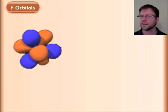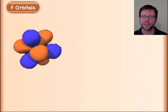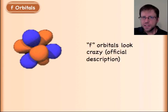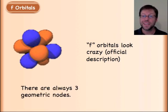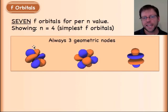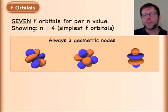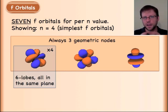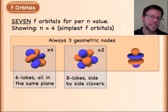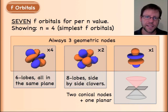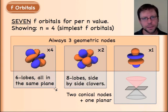The f orbital is the last type you'll actually use in practice — theoretically more exist, but the periodic table is only so large. F orbitals always have three geometric nodes, and there are seven of them. Their shapes are quite complex: some look like six-sided clovers, some like two clovers stacked giving eight lobes, and one resembling a p orbital with a double inner tube. Four are of one geometry, two of another orientation, and one stands alone — each with three geometric nodes.